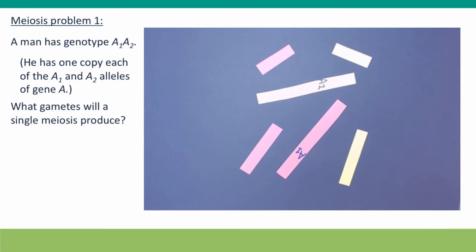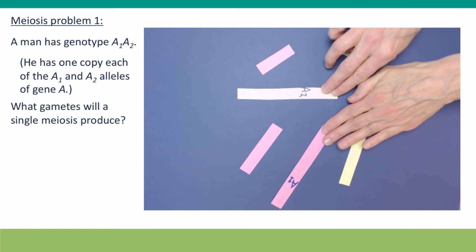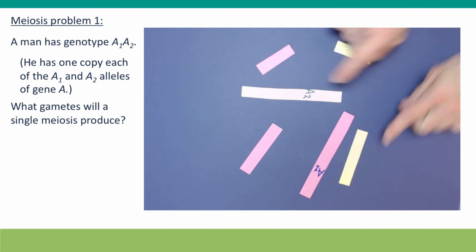This man has genotype A₁A₂, and I've shown that as two long chromosomes, a pink one and a yellow one with the two alleles on them.